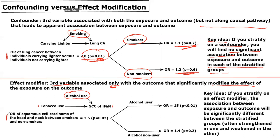If we first perform an unadjusted analysis, we would find that the odds of squamous cell cancer among smokers is 2.5 times the odds of squamous cell cancer of the head and neck among non-smokers, and this is statistically significant with a p-value less than 0.05. If we then stratify by alcohol use, we would find that among alcohol users, the odds ratio of head and neck cancer among smokers is 15 times that of non-smokers. So the effect of smoking on the risk of head and neck cancer has been modified by alcohol use.